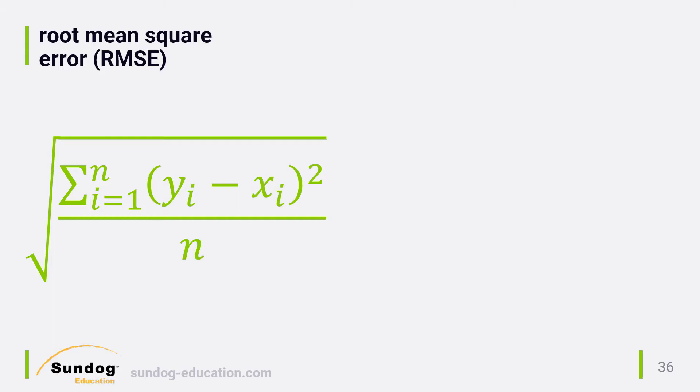So again, you can just take the name of the metric literally. Root means that we take the square root of the whole thing when we're done, mean refers to an average, and square error is the square of each individual rating prediction error.